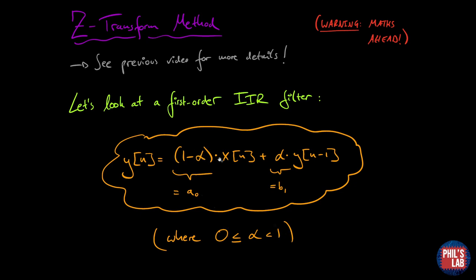Let's look at a very simple first order IIR filter. The output y of n is one minus alpha where alpha is some constant that goes between zero and one, times x of n which is my current input sample plus alpha times y of n minus one. So I'm feeding back my previous output sample, multiplying it by alpha. This is a first order IIR filter. In comparison to the general form one minus alpha is my a0 coefficient and alpha is my b1 coefficient.